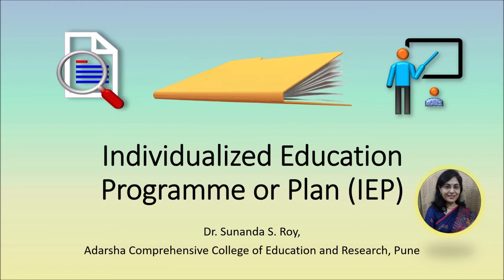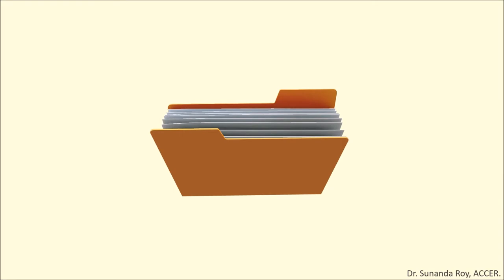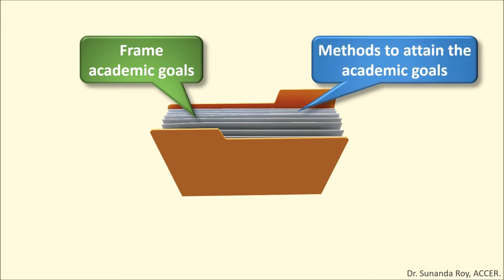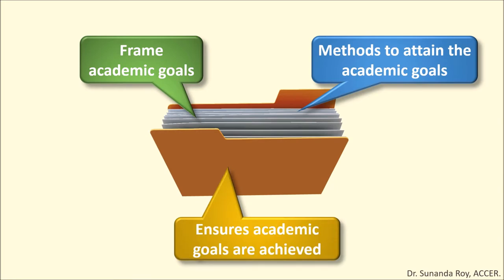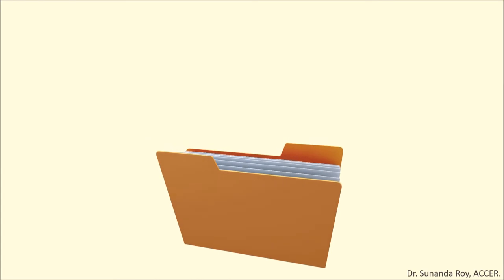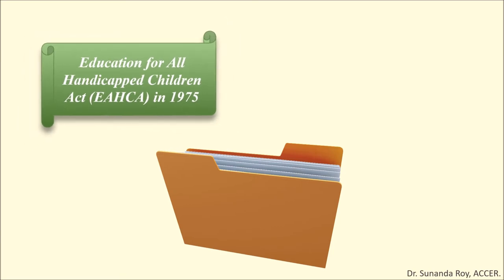An Individualized Education Plan or Individualized Education Program is a document developed for differently abled students to help them frame their academic goals and the methods to attain these goals. The history of IEP can be traced back to the 1970s, when parents of differently abled children encouraged Western legislators to adopt the Education for All Handicapped Children Act, also known as EAHCA, back in 1975.